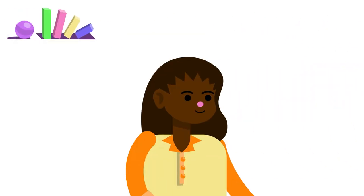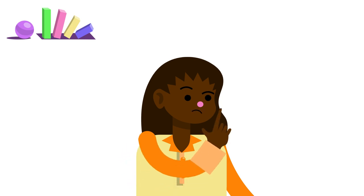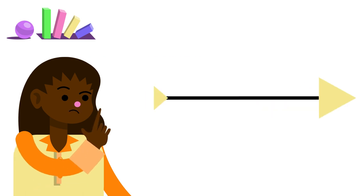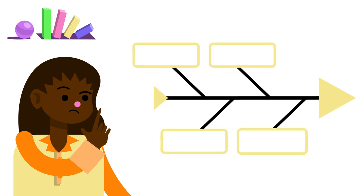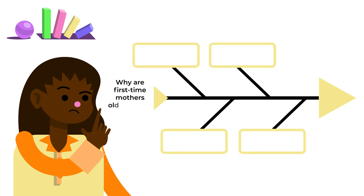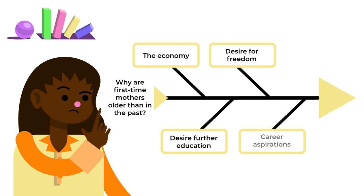Cause and effect or problem and solution. Using a graphic organizer can help you analyze the cause of events or problems. The fishbone diagram can be used to organize writing tasks that focus on cause, effect, or on cause and effect, with the cause above and the effect below. It can also be useful for diagramming a problem and possible solutions.